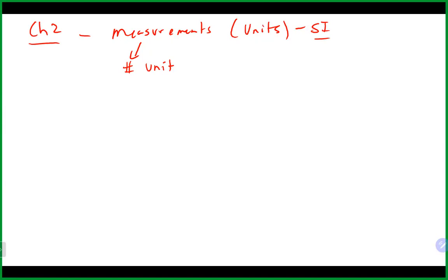We want to remember what each of those units represents, so when we say something like mass, we're talking grams or kilograms rather than milliliters or liters, which are obviously volumes. In addition to that, we talked about temperature, and there are three types of temperature scales: degrees Celsius, degrees Fahrenheit, and Kelvin.